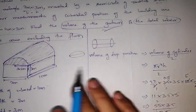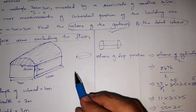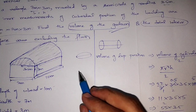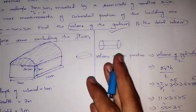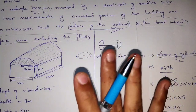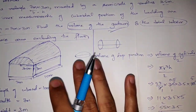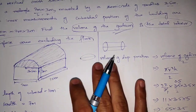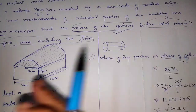So now you can practice these problems. These are based on combination of solids — volume and surface area. You have 5 marks or 4 marks questions of this type. Discuss the first question; next question is also of a very similar type.